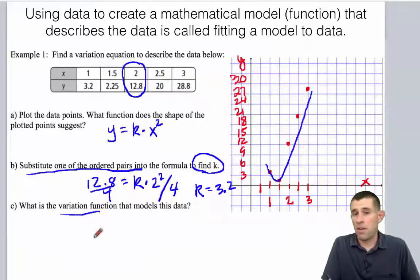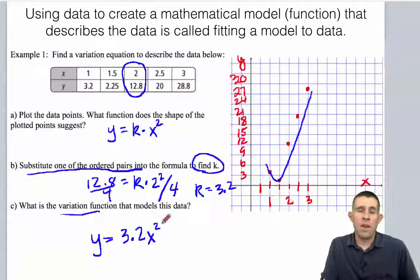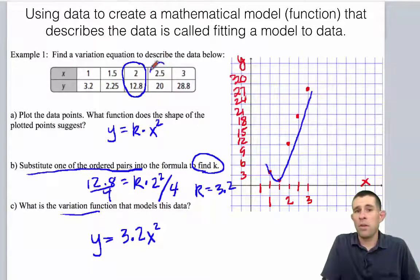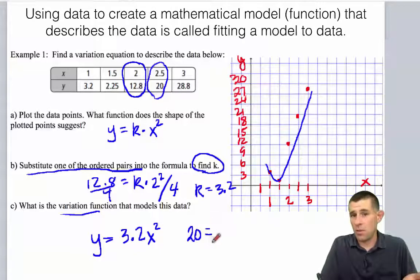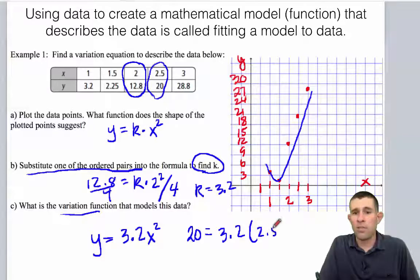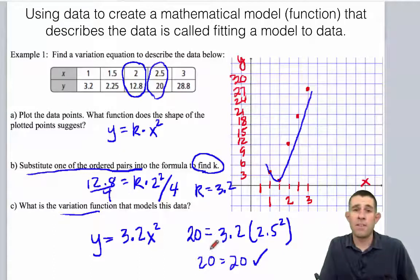Now let's take and rewrite our variation formula. y is equal to 3.2 times x squared. Now our final step really should be to take another point, another data set, out of our data set and to check its accuracy simply by plugging our y value in, which in this case is 20, equal to 3.2 times 2.5 squared. Now when we square 2.5 and multiply it by 3.2, we do get the value of 20. So we can see that this is our correct model that fits this data.